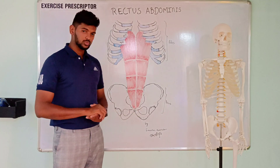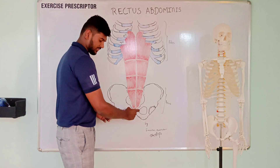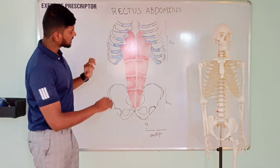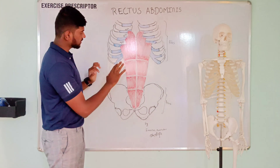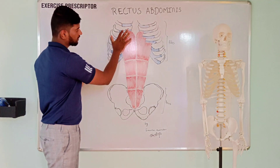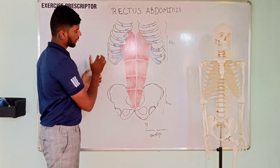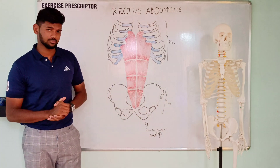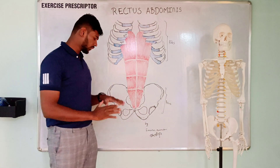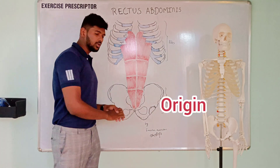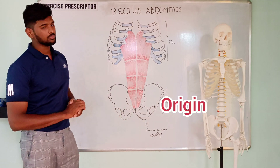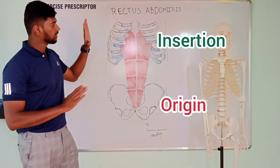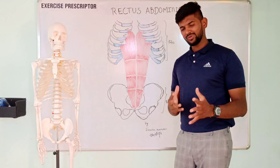Distally, it attaches over the crest and symphysis of pubis. Proximally, rectus abdominis attaches over the xiphoid process and cartilages of the 5th, 6th, and 7th ribs. The distal attachment is the more fixed attachment, so we call it the origin. The proximal attachment is the more mobile attachment, so we call it the insertion.